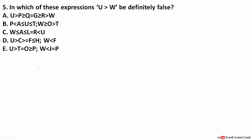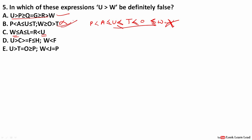Next: in which of the following expressions is U > W definitely false? Checking each option — for most, U > W holds true. But in option B, the sign on U's side is a less-than sign, making U > W false. So the answer is B.